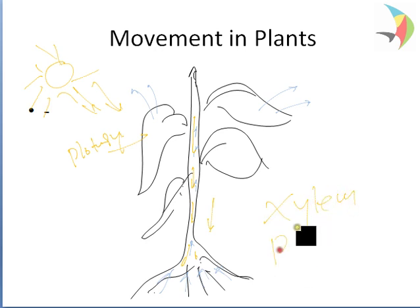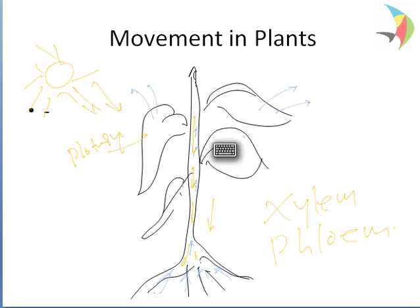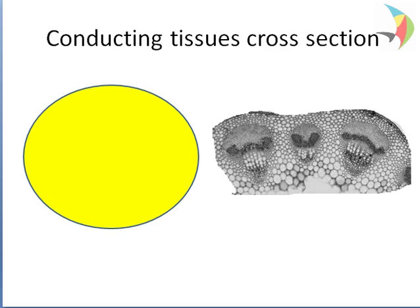The two pathways are xylem and phloem tissues. Xylem moves water and minerals obtained from the soil upward, while phloem transports all the products of photosynthesis — synthesized in the leaves — to other parts of the plant.